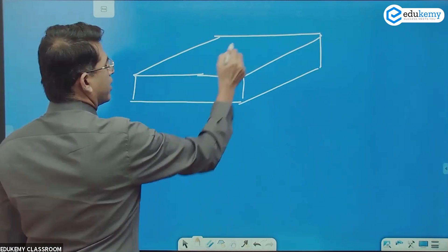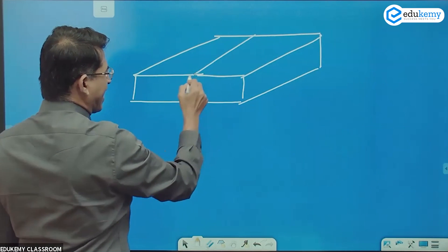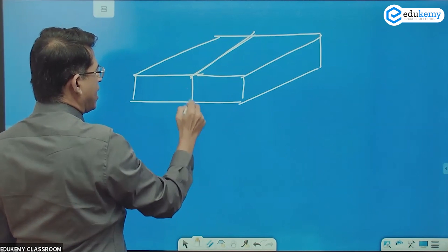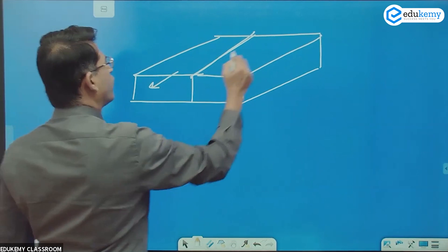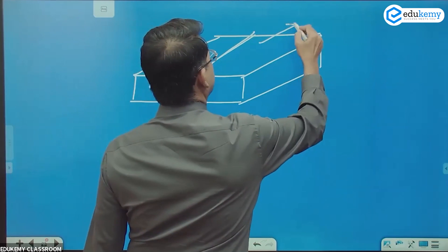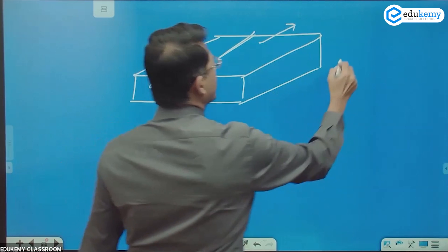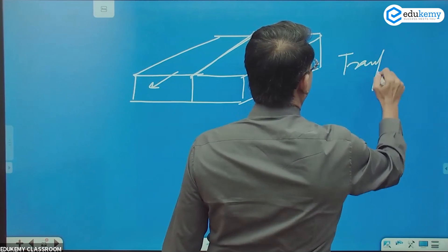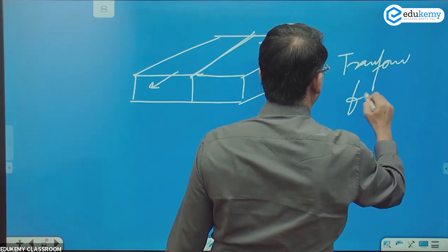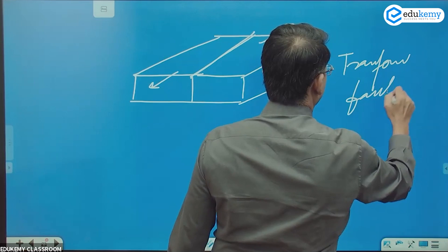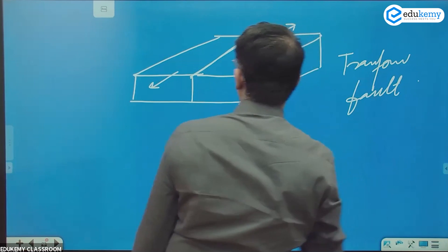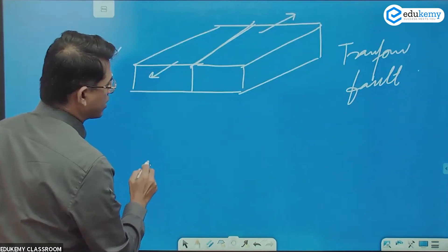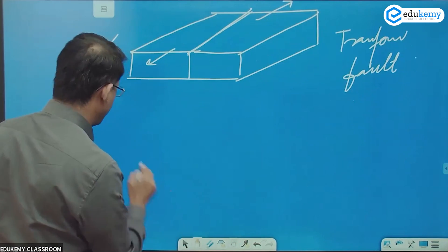If you have a crack here and these two move like this — horizontally along the surface — then we call this a transform fault. I'm talking about a different case here.